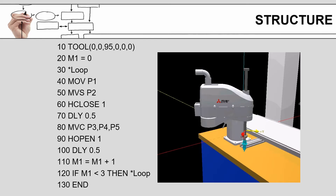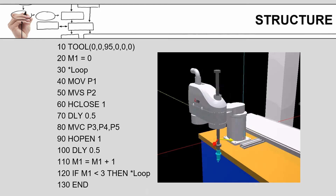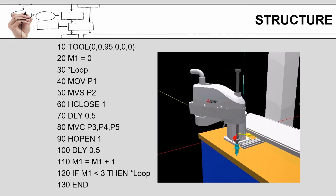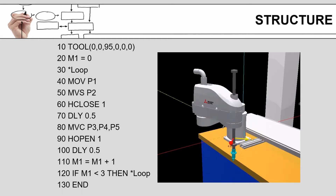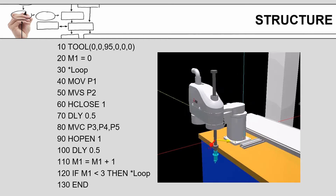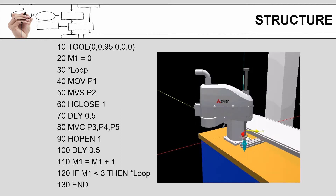This is a short video showing those motions in that program running. It does the moves, then does the pause for the hand close, and the circular move, which is the MVC. And as you noticed, it only did it three times.